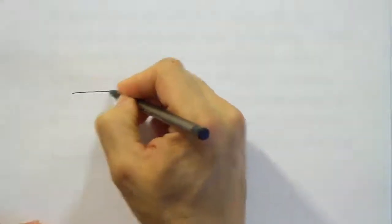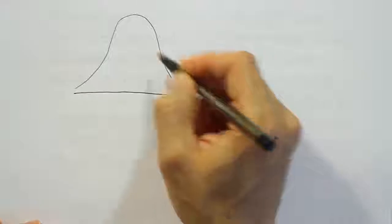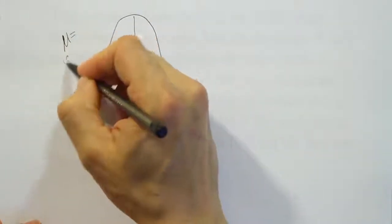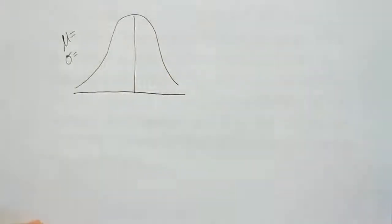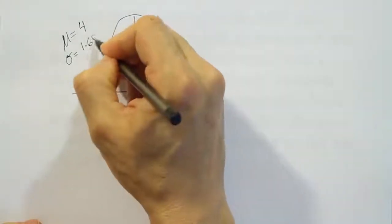So we know it's bell-shaped. I'll draw a bell curve then. I'm going to label on the curve the mean and the standard deviation that they gave us in the problem. So when we read the problem, it said that the mean was 4 cm and the standard deviation was 1.68.